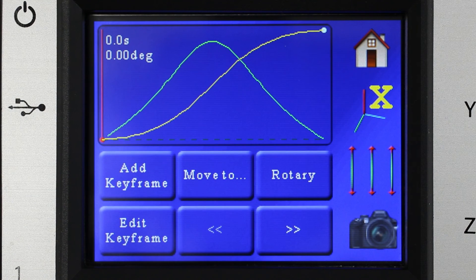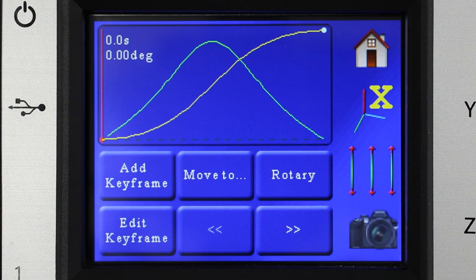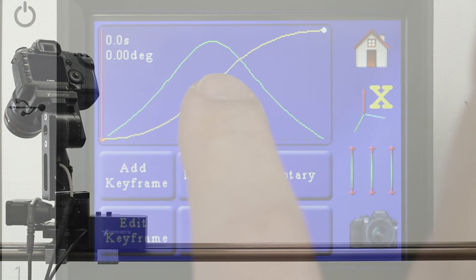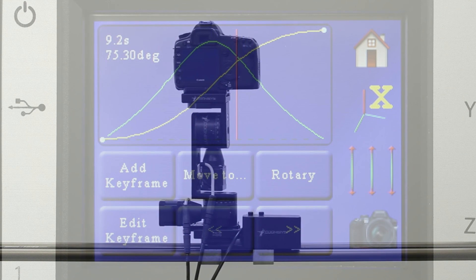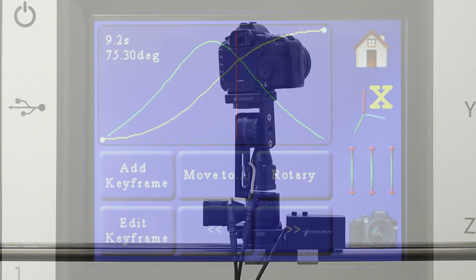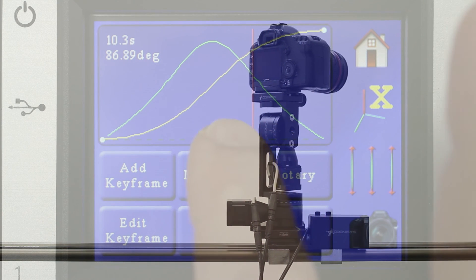And what we're going to do first is demonstrate how touching any point along the curve will actually move all three axes to their corresponding position. So you'll see all three axes move over to where they need to be and we can jog it around as needed.